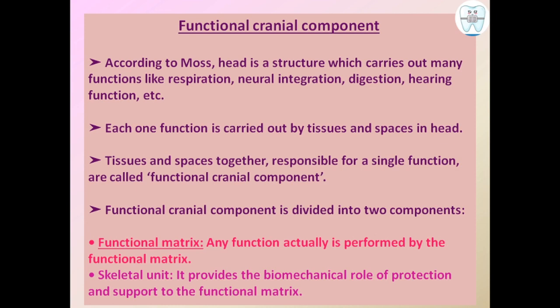According to Moss, the head is a structure which carries out many functions like respiration, neural integration, digestion, and hearing. These functions are carried out by tissues and spaces in the head. The tissues and spaces together, responsible for a single function, are called the Functional Cranial Component, which has two parts: Functional Matrix and Skeletal Unit. The functional matrix includes the totality of soft tissues associated with a single function.